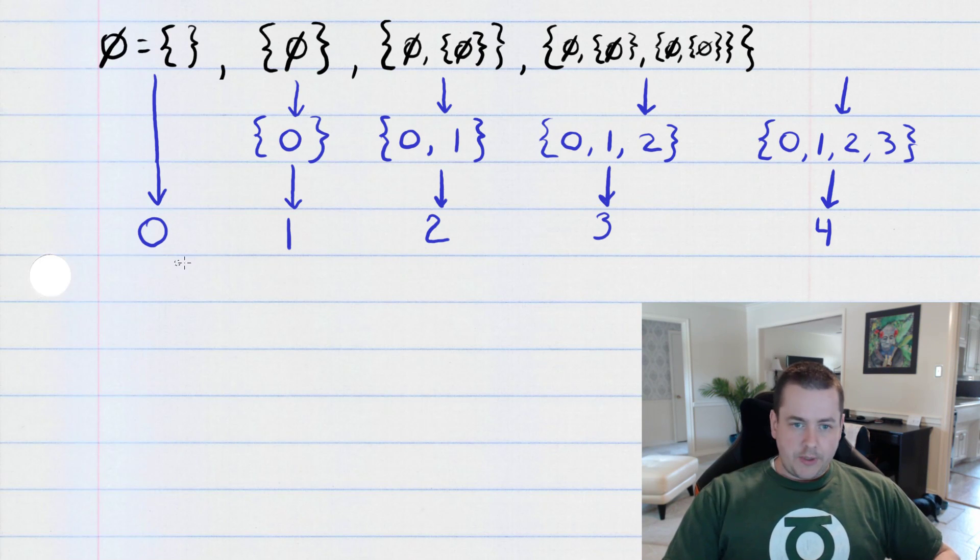And then, once you get the natural numbers, you can use set theory again. You can build the integers. You can build the rationals. You can build the real numbers and the complex numbers. And it's all really interesting.